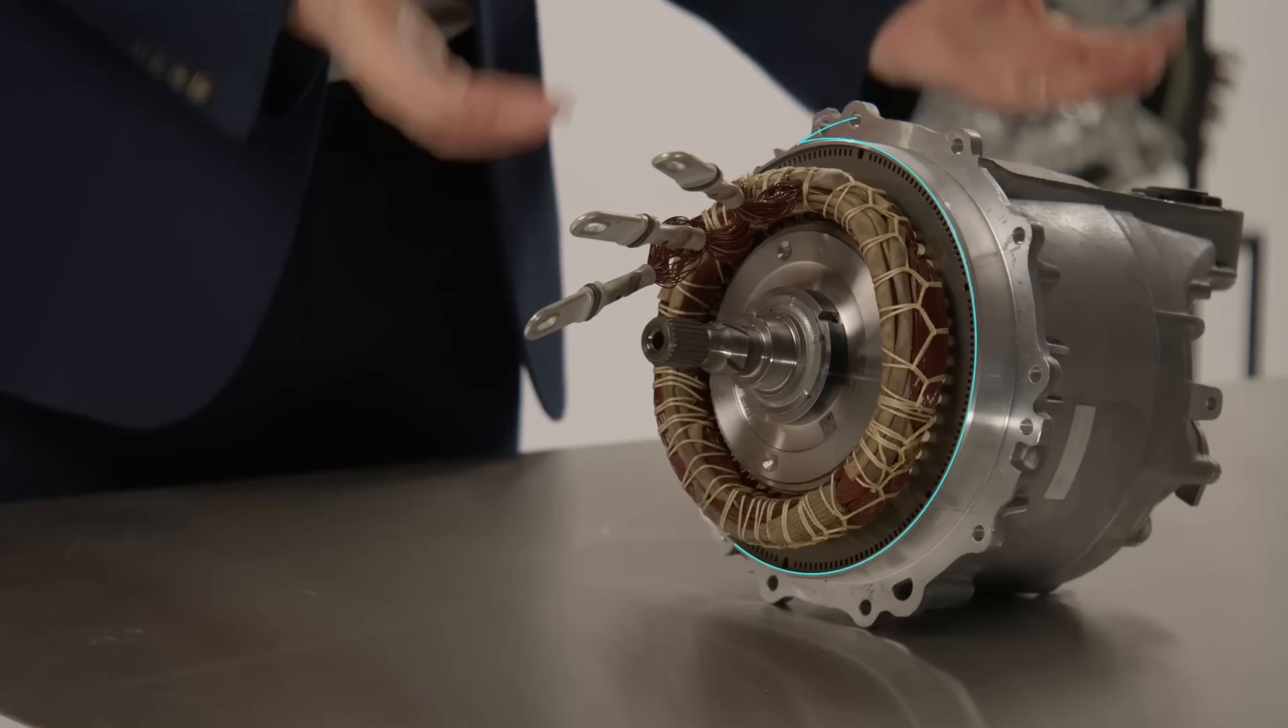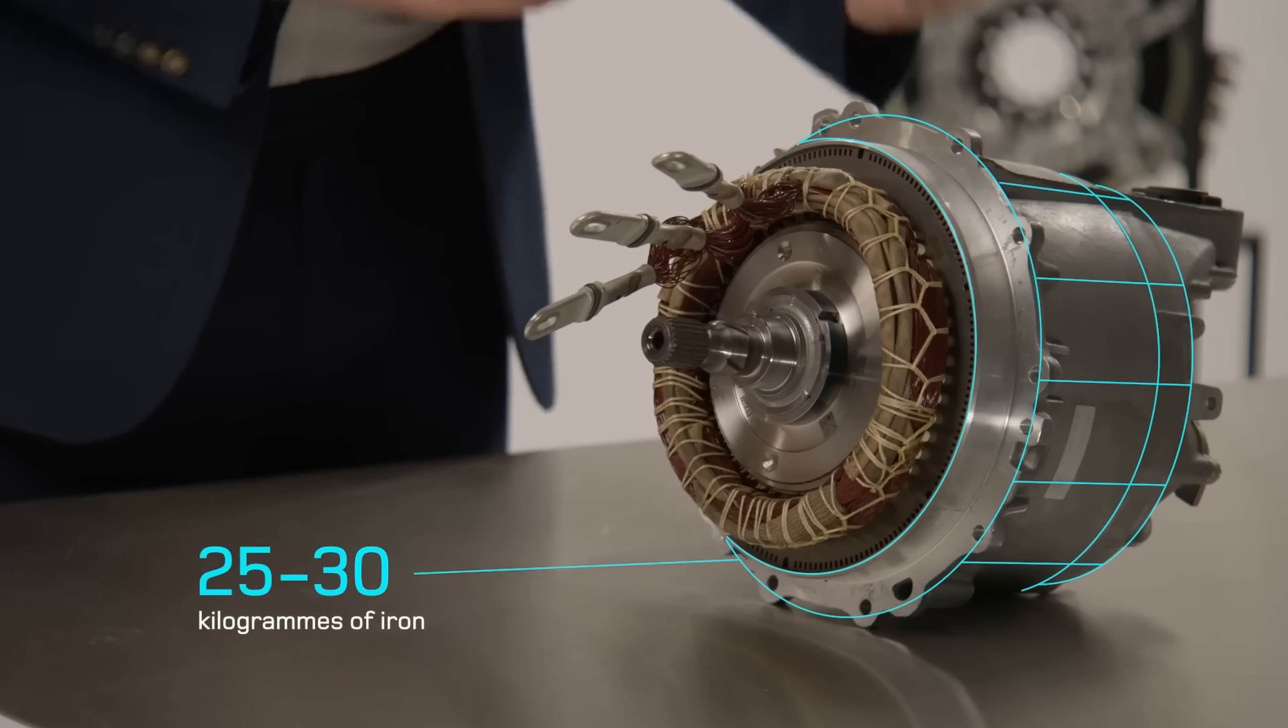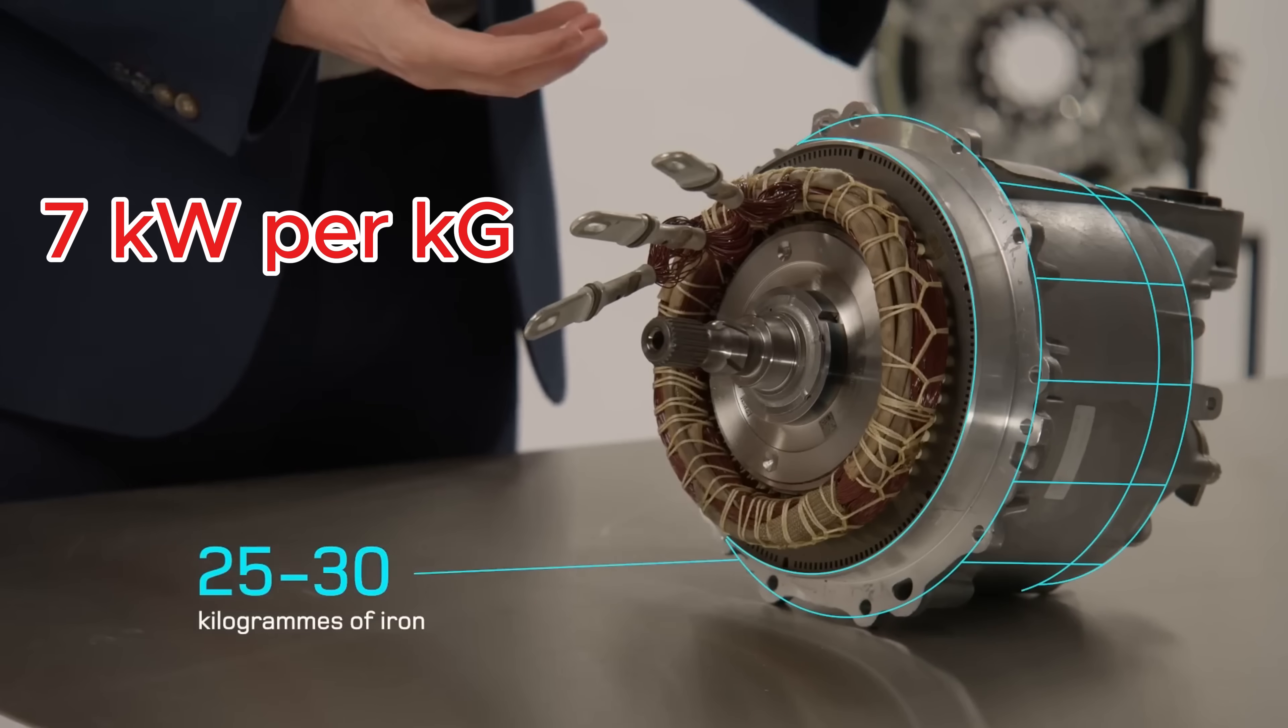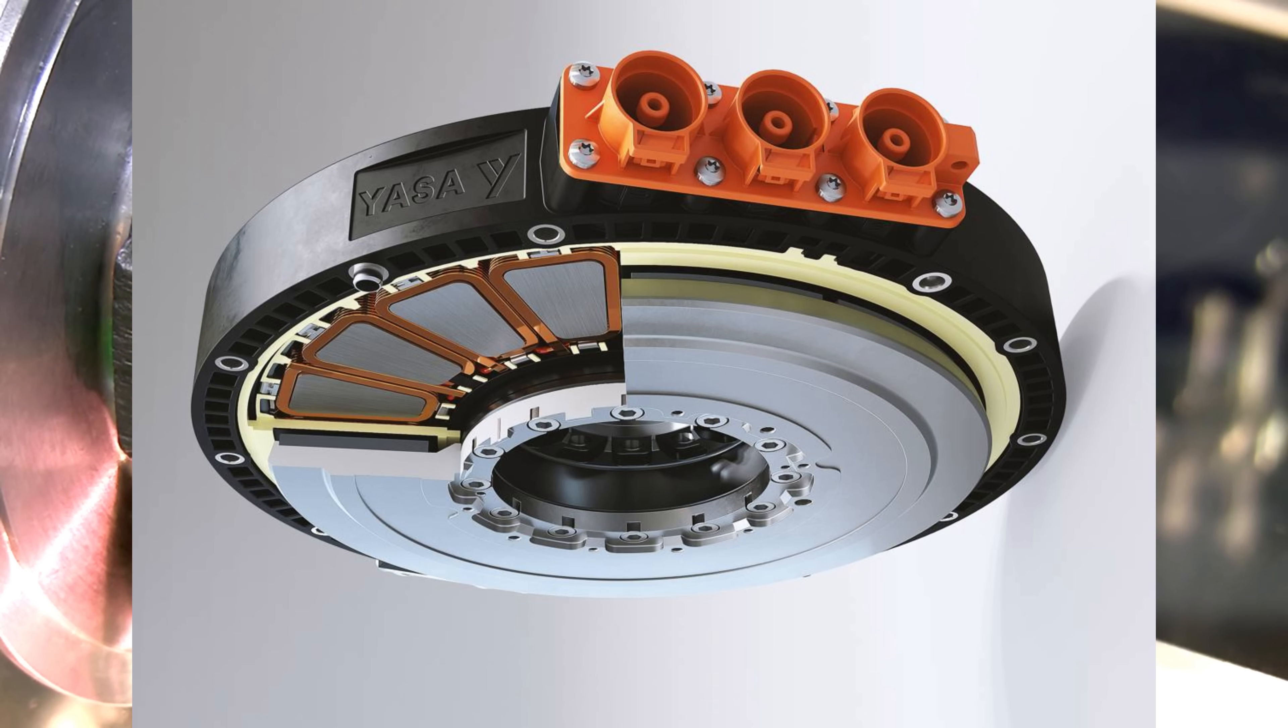Let's get into the numbers. A standard radial motor might produce around 7 kilowatts per kilogram. YASA's axial flux motor hits 15 kilowatts per kilogram, more than double.